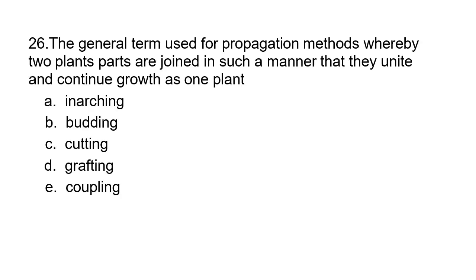Number 26: The general term used for propagation methods whereby two plant parts are joined in such a manner that they unite and continue growth as one plant — a) inarching, b) budding, c) cutting, d) grafting, or e) cootling. The correct answer is grafting.